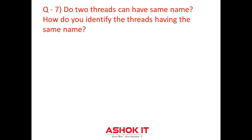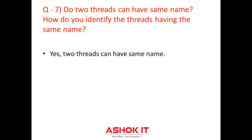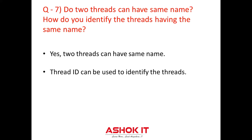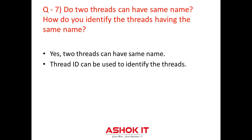Question seven: Can two threads have the same name? How do you identify threads having the same name? Yes, in your program, two threads can have the same name. Two threads which have the same name can be identified by their thread ID, because thread ID is a unique long number which remains unchanged throughout the life of a thread. Thread ID can be retrieved using getId().